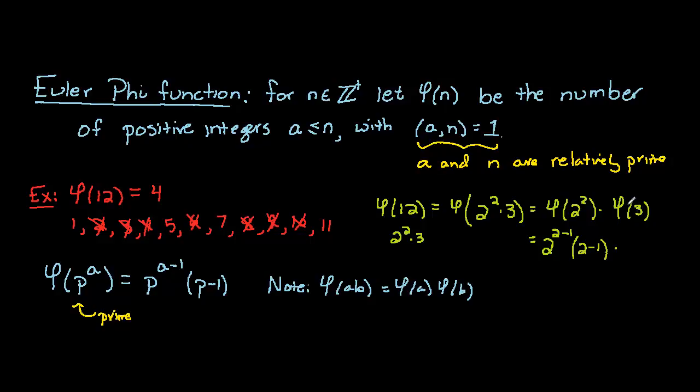Similarly for phi of 3, well this is 3 to the first power. So when we look at our formula we're going to have p to the zeroth power, if you'd like to think of it that way, times the prime minus 1. And in general we usually just jump right to the shortcut that phi of a prime is the prime minus 1.